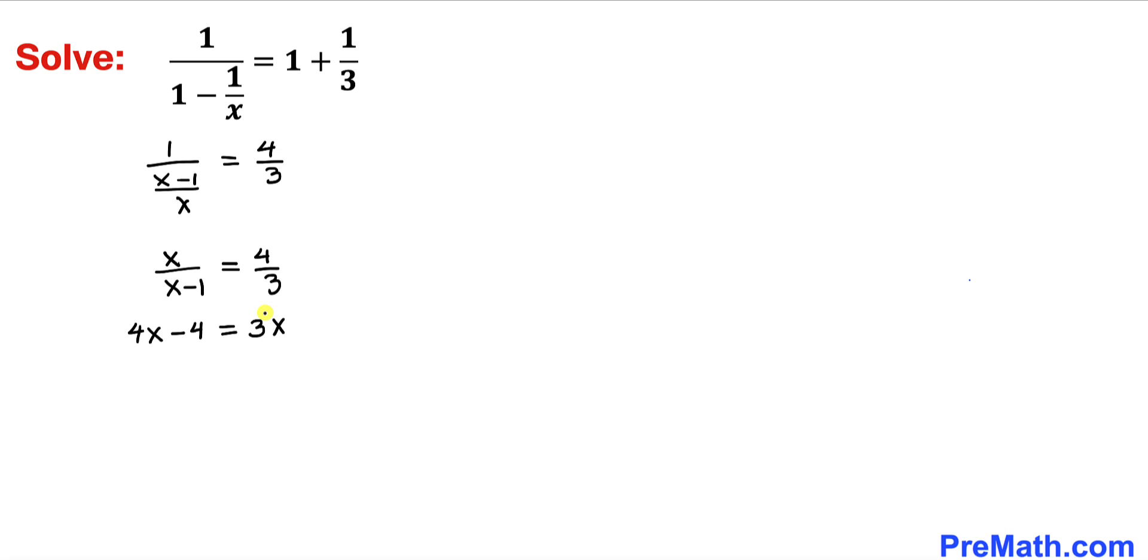Now let's move this 3x on the left hand side, and at the same time I'm going to move this negative 4 on the right hand side. So therefore this could be written as 4x minus 3x equals to positive 4. Therefore, our solution x equals to positive 4.